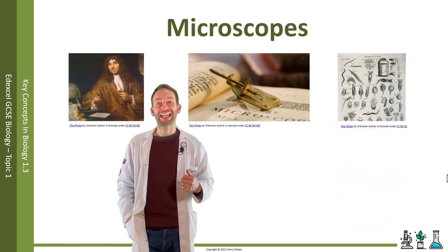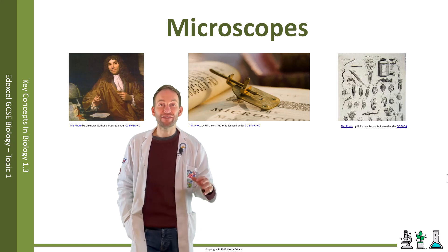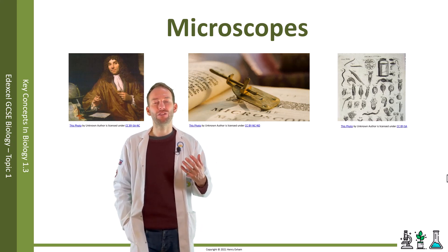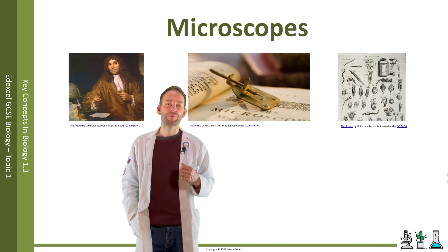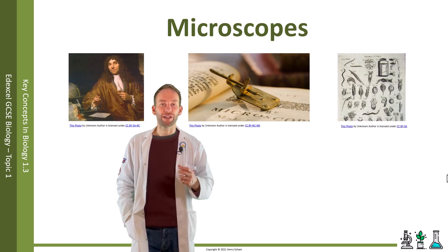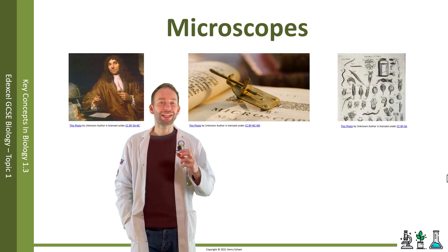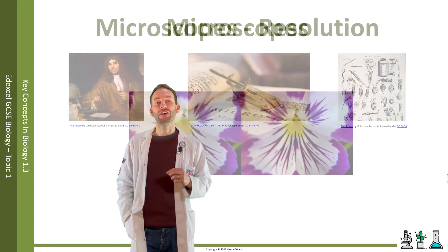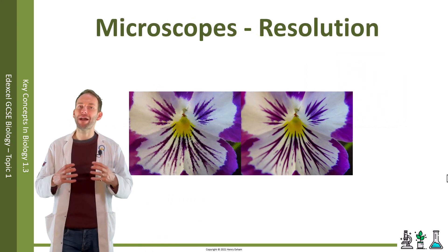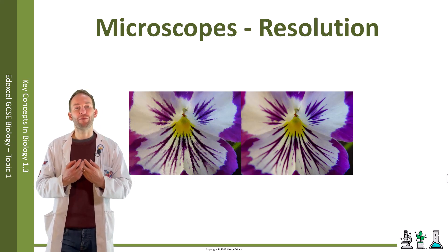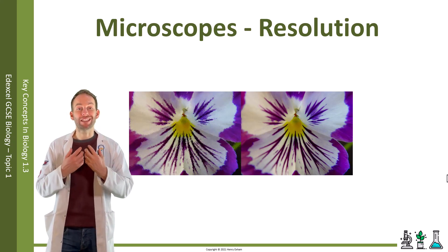Hooke's microscope was groundbreaking and allowed scientists to see structures they had never seen before, but a 30 times magnification was not that powerful due to those poor lenses. Antoine van Leeuwenhoek invented much more powerful single lens microscopes that could magnify up to 270 times, allowing him to famously discover microscopic organisms in a drop of water for the first time. Now, it's not only about how much bigger an image is, but about the detail that you can see — we call this level of detail the resolution.